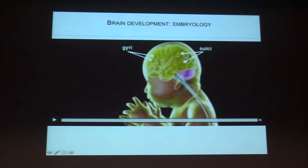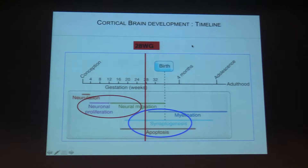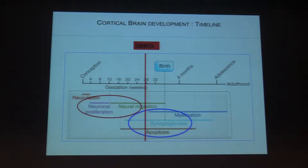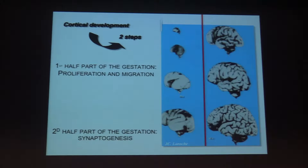The major difference is the digging of the different sulci. We have two main phases in gestation: before and after 28 weeks. The cortical development is mostly related to neuronal proliferation and synaptogenesis, and all these steps form the cortical aspect of the brain. In the first phase, the brain has just a few sulci.